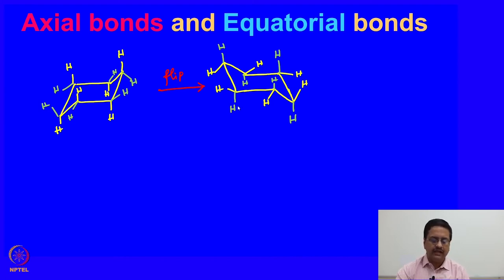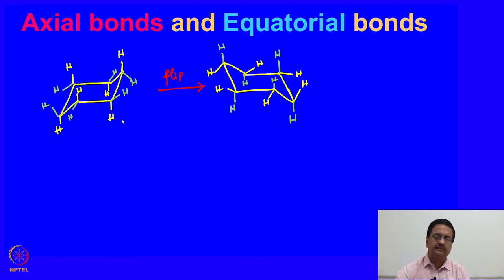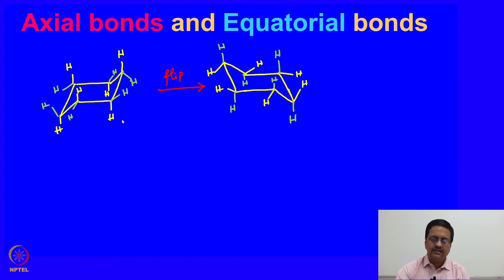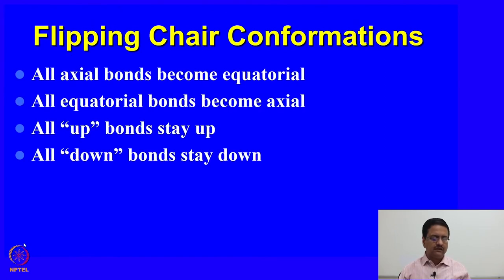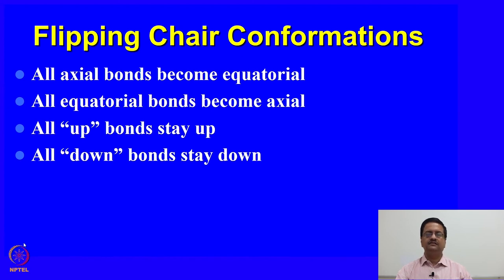So on flipping, the axial bonds become equatorial and the equatorial bonds become axial. This ring flip happens at room temperature because both conformations are of the same energy. Therefore, we do not distinguish between these two different conformations. What we want to indicate here is that the ring flip makes an axial bond equatorial and an equatorial bond axial. When you flip a chair conformation, all axial bonds become equatorial and all equatorial bonds become axial, which essentially means all up bonds stay up and all down bonds stay down.